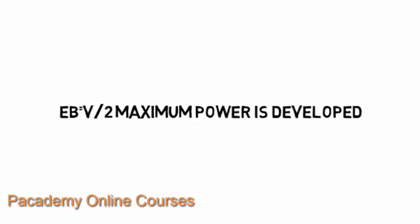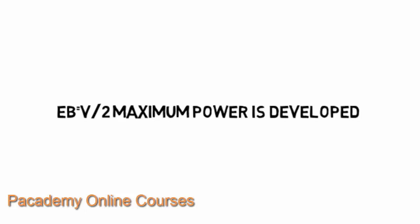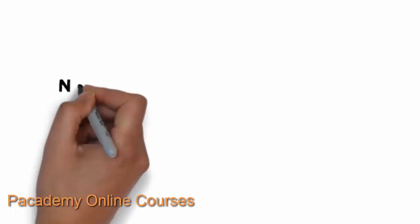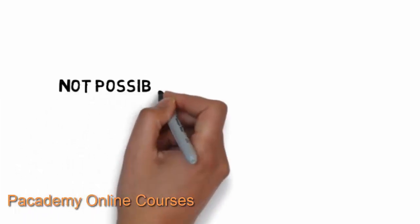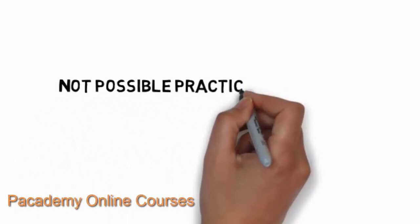Substituting that equation, we get E_B equal to V divided by 2. That is, maximum power is developed in a motor when the back EMF is equal to half of the supply voltage.